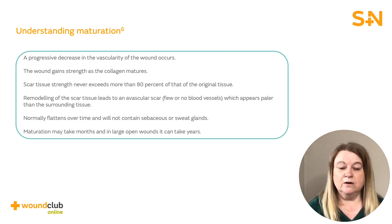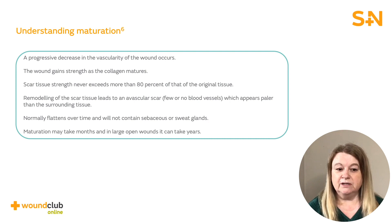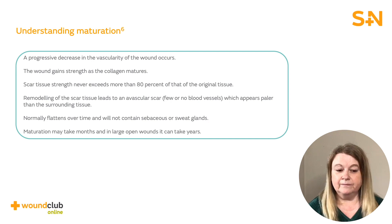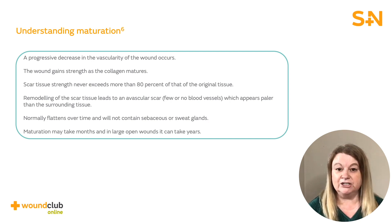Maturation occurs once the wound is fully closed. The newly formed collagen matures, increasing the strength of the wound and reorganises to form a scar. However, the skin tissue will only regain 80% of its original strength. The scar tissue does not have an effective blood supply, so it is avascular in nature. This is why the scar appears paler than the surrounding tissue. The scar will normally flatten over time and will not contain any sebaceous or sweat glands.